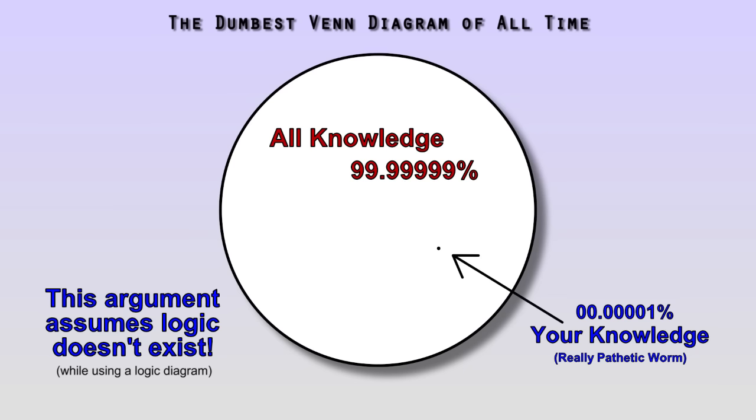For instance, let's try to use this argument against the disbelief in square circles. Let's say I describe something as perfectly square, having four equally spaced 90 degree angles, but that it is also a perfect circle, having no angles at all. Now, if you doubt that such a thing exists, would it then be a good response for me to tell you that this square circle might exist somewhere within all this knowledge of which you are currently ignorant?